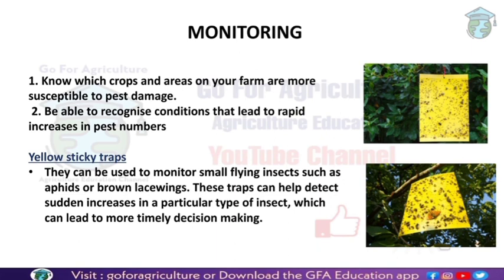Let's start with monitoring. Monitoring is very important in integrated pest management because after monitoring we can make a decision on which control to use — what kind of chemical control, genetic control, or cultural control. Monitoring is essentially scouting — counting the number of pests and identifying which variety of pest is present.